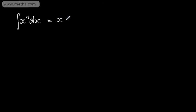Let's start off with some notation. What we use is the integral sign, which is an elongated S. The integral of x to the power of n with respect to x gives us x to the power of n plus 1, divided by n plus 1, plus c. We note that n cannot be equal to negative 1.